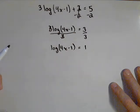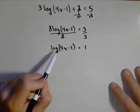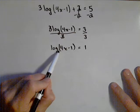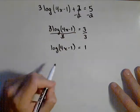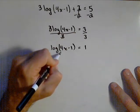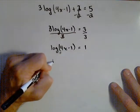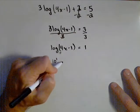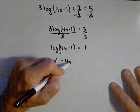Now we've isolated the log piece. We want to rewrite this as an exponential. If there's no base written, it's automatically base 10. So base 10 is the base of our exponential, and we have 10^1 equals 4x - 1.